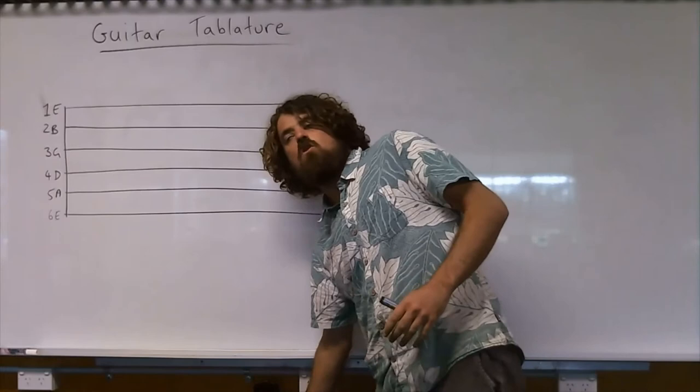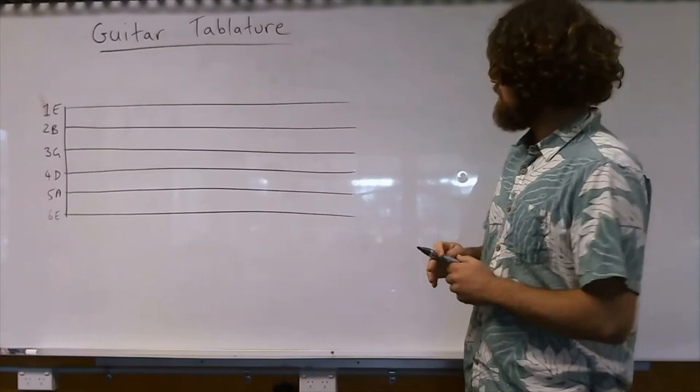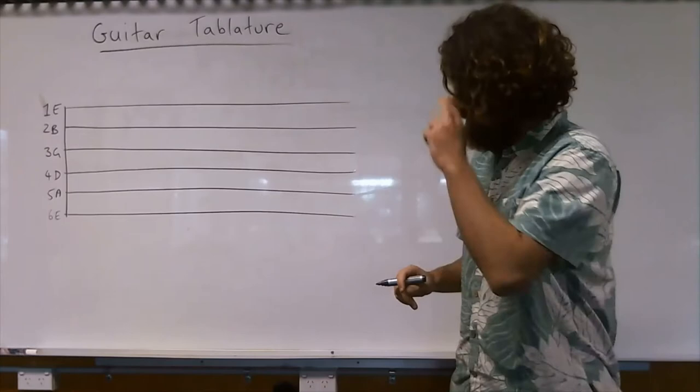The first song you guys are going to learn is going to be Smoke on the Water, and that entire song is just played on string 6E, which is going to be the bottom line on the TAB.